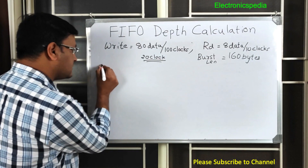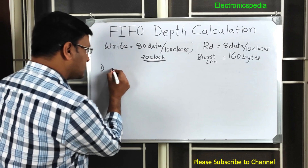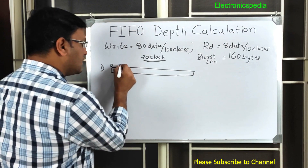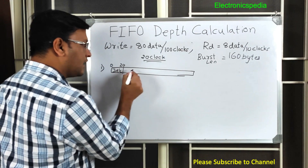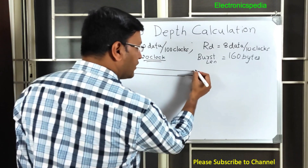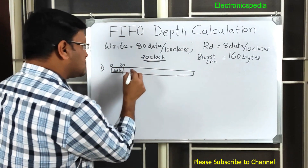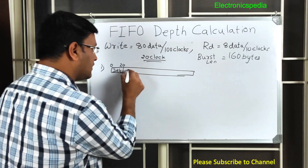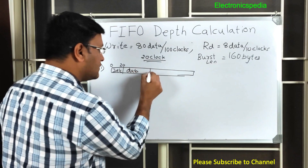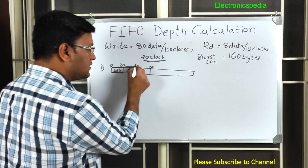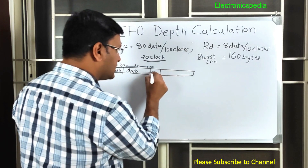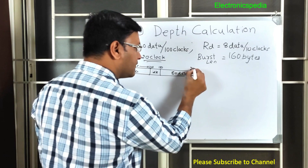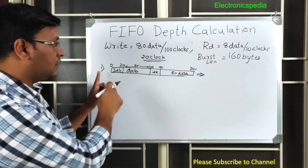In the first case, assume this is my data window from 0 to 200. There is first a 20 clock cycle idle window, and then we write 80 bytes of data from clock cycle 20 to 100. Then again there is an idle period, and then another 80 bytes of data are written from 120 to 200. So in total we write 160 bytes of data in 200 clock cycles.